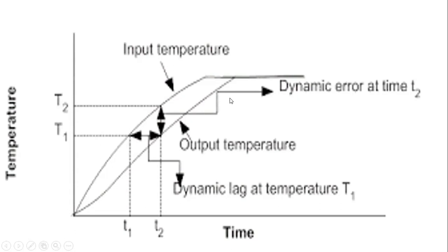The dynamic error is always referenced with respect to a specific time: maximum dynamic error occurs at time T2. Maximum lag is at temperature T1. The lag is always referenced with respect to the output value, whereas the dynamic error is referenced with respect to time. Understanding this helps when designing control systems.